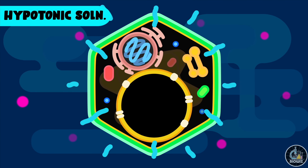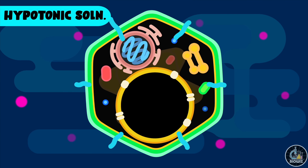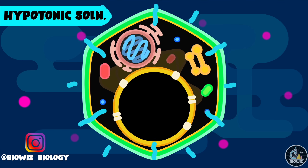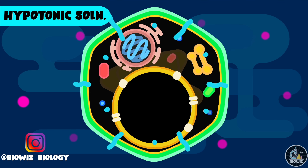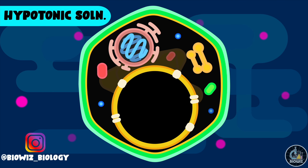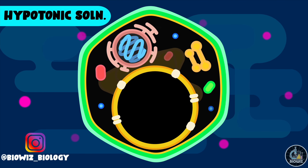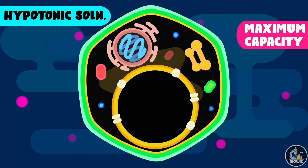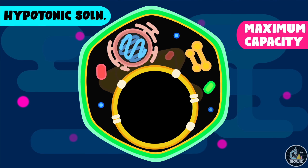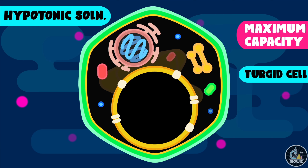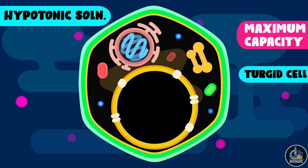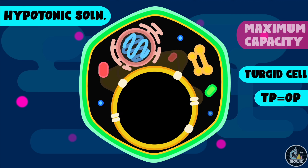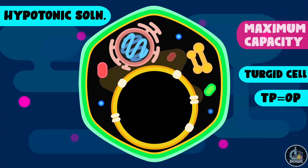This pressure exerted on the cell wall is called turgor pressure. The turgor pressure pushes the cell wall in the outward direction, and as a result the plant cell starts to swell up as the water keeps entering. But this can't continue forever as the cell wall is not very flexible. There comes a time when the cell volume reaches its maximum capacity and no more water can enter inside it. This cell is now called a turgid cell.